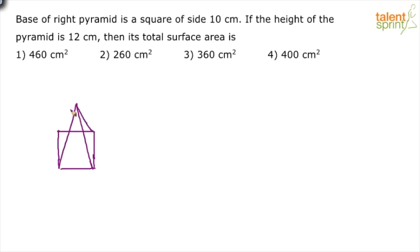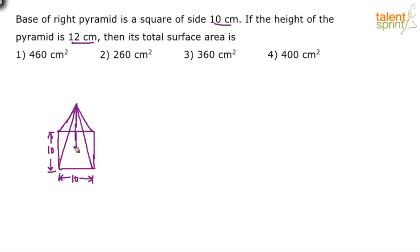All the sides are 10 centimeters — it is a square — and the height is 12 centimeters. The height of the pyramid is the distance from the top point to the center of the base. This height is 12.